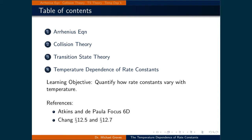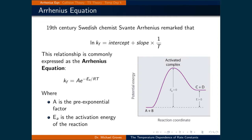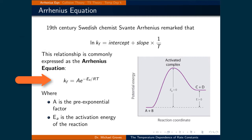Finally, we will calculate how the rate constant varies with temperature according to the Arrhenius equation. In the 19th century, the Swedish chemist Svante Arrhenius remarked that there was a linear relationship between the natural logarithm of the rate constant of a given reaction and the inverse of its temperature.